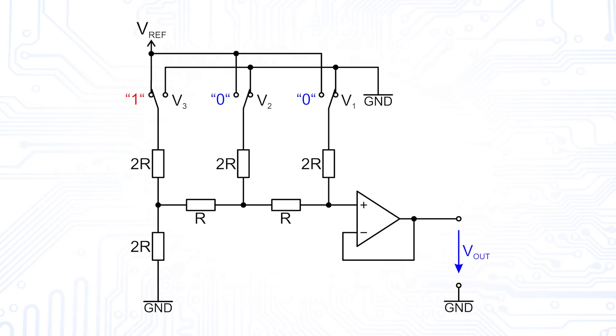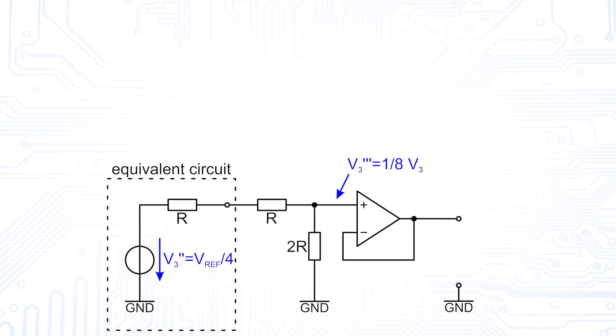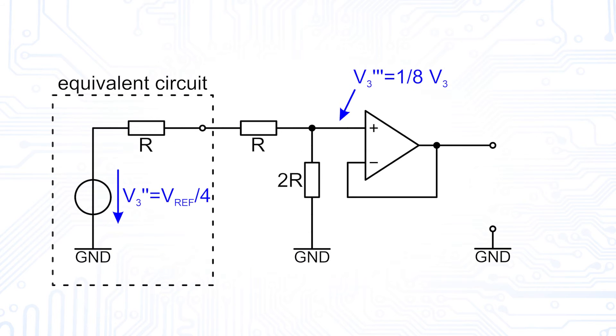Finally, we look at the contribution of the last input voltage. We see that the equivalent voltage is V3 over 4. This results in a contribution of V3 over 8 to Vout through the voltage divider. We can see how the pattern would continue at the higher resolution.